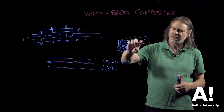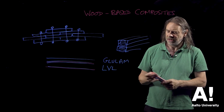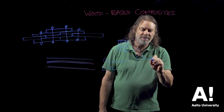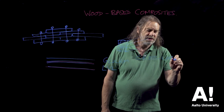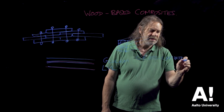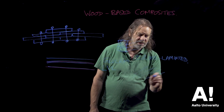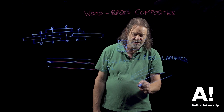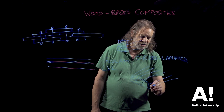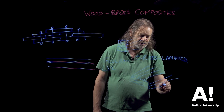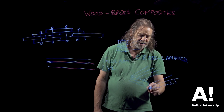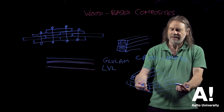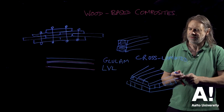A much more recent introduction to this family is cross laminated timber, where we have pieces of wood joined together in one direction, and then there's another layer underneath where the pieces are joined at 90 degrees — orthogonal to those pieces — and then the next layer goes back to the original arrangement. That makes very large sheets of material from fairly small pieces of wood.